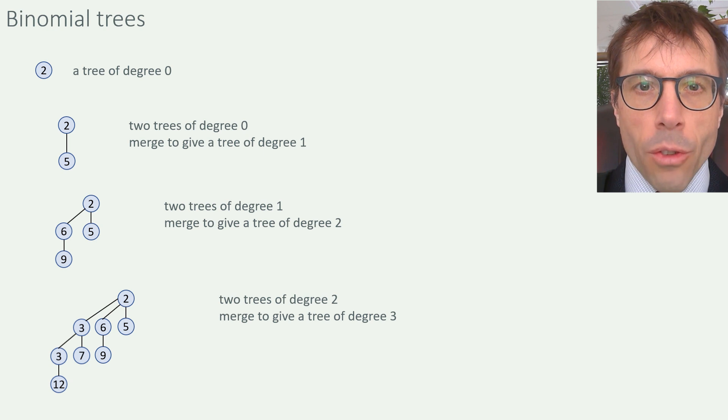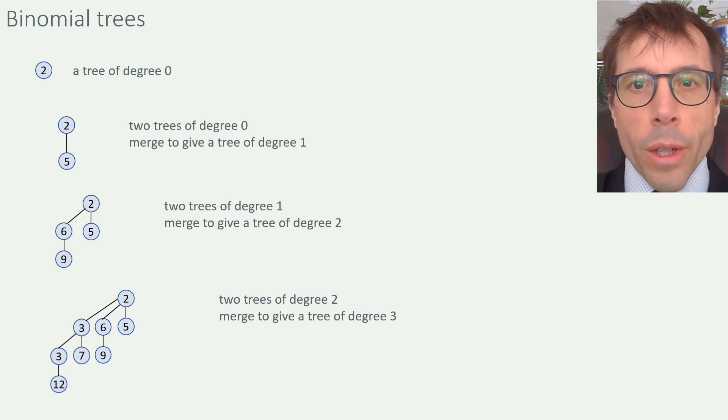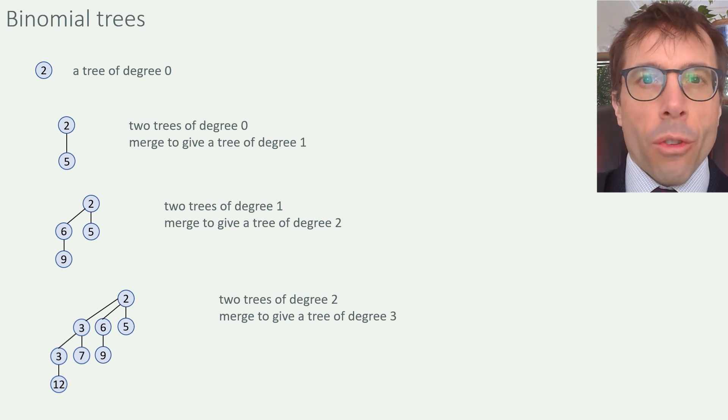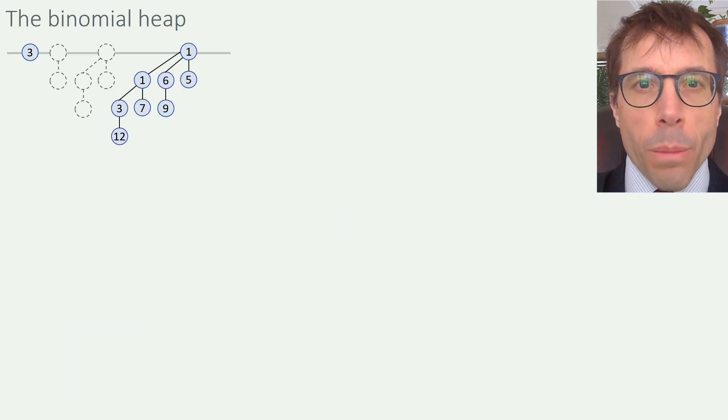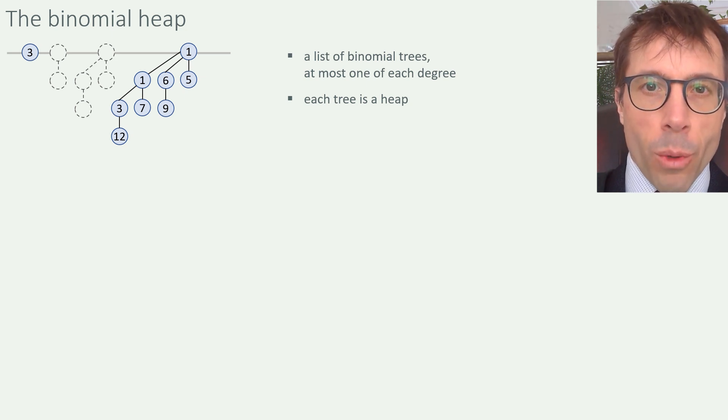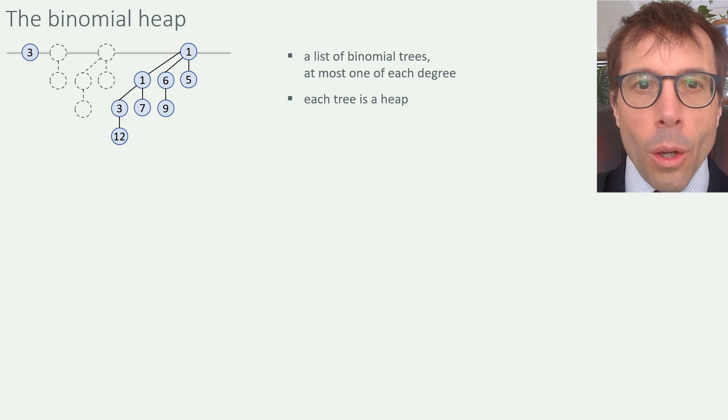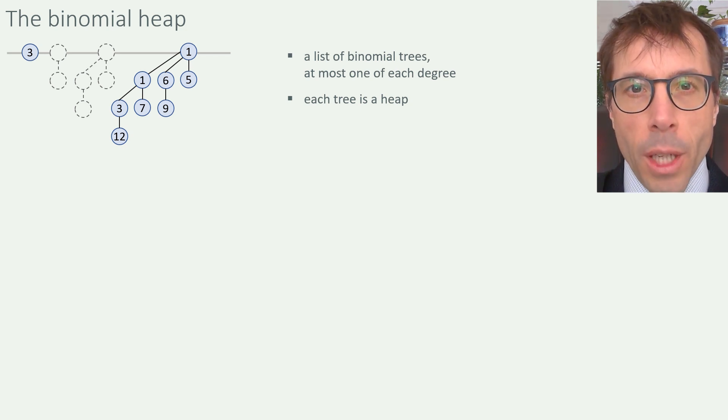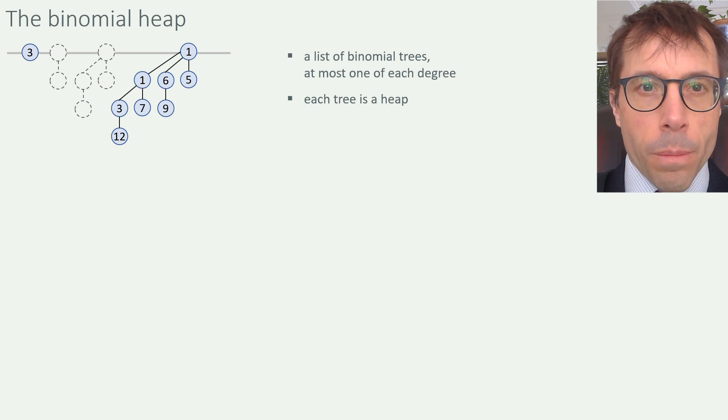The word degree, by the way, just means number of edges. When we say binomial tree of degree three, we're talking about the root node, which has three edges coming out of it, i.e. the root node has degree three. Okay, so now we can explain what a binomial heap is. A binomial heap is a collection of binomial trees, with the restriction that we're only allowed at most one tree of any given degree. Here, I've drawn in the missing trees with dotted lines just to indicate this heap doesn't have any tree of degree one or two. Also, another condition, each tree is required to be a heap. In other words, all the nodes satisfy the heap property that a node's key is less than or equal to those of its children.